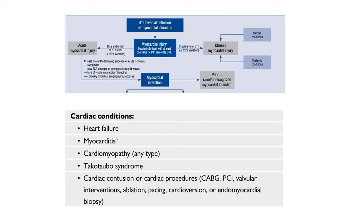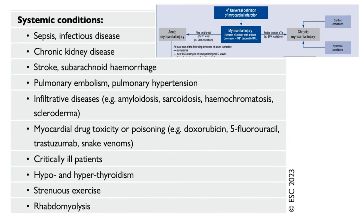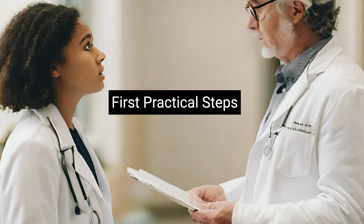More commonly, myocardial injury results from non-cardiac conditions: sepsis, chronic kidney disease, stroke, subarachnoid hemorrhage, pulmonary embolism, pulmonary hypertension, and any critically ill patient can have troponin elevation. Hypothyroidism and hyperthyroidism can elevate troponin, as can rhabdomyolysis and even strenuous exercise such as marathon running.